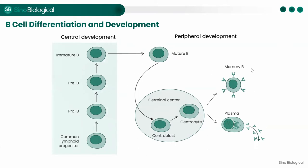The second stage is development in peripheral immune organs, where mature B-cells migrate into the peripheral immune organs and are activated by specific antigens with the help of T-cells. These activated B-cells undergo proliferation and differentiation, thereby forming germinal centers. Mature B-cells differentiate into plasma cells and memory B-cells. Plasma cells are terminally differentiated B-cells whose main function is to produce antibodies. Memory B-cells can survive for a long time in the body. Upon re-stimulation by the same antigen, they can rapidly differentiate into plasma cells and produce antibodies, triggering the immune response.